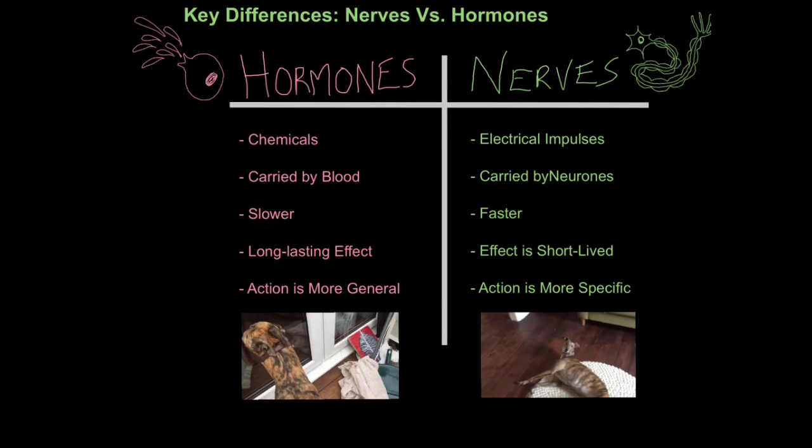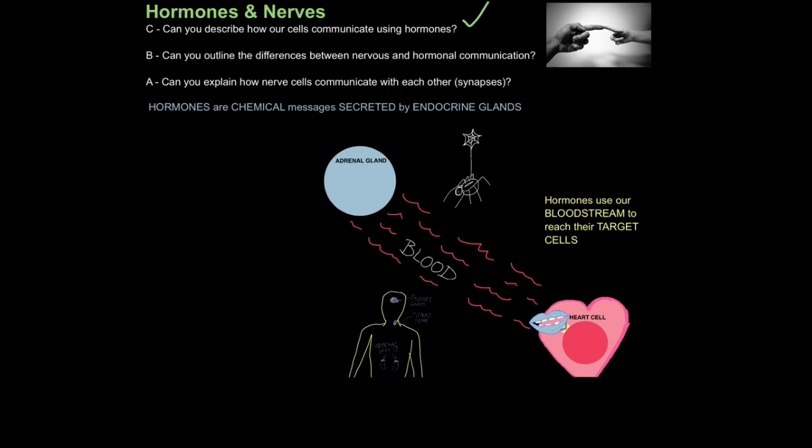So much slower to take effect, but it's far longer lasting. So our heart rate will be raised for a fairly lengthy period of time after the exercise. Also, you can see how much more general the effect of the hormone was as opposed to the nervous message, which only really affected one specific region. So those are the key differences between nervous and hormonal forms of communication. Aim two, done.